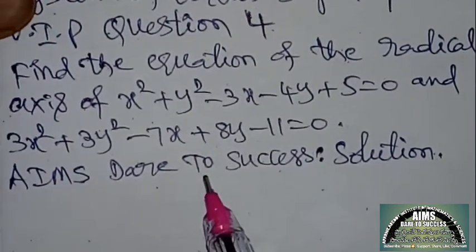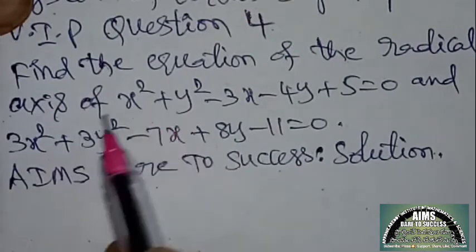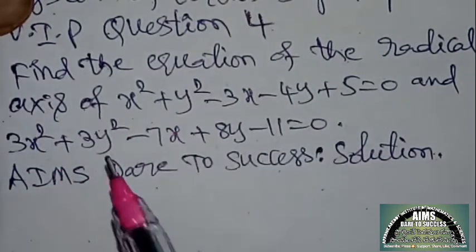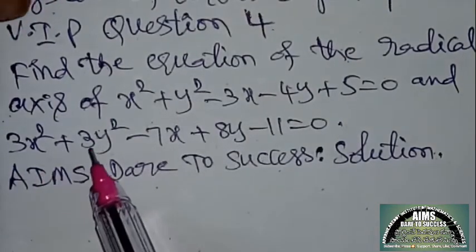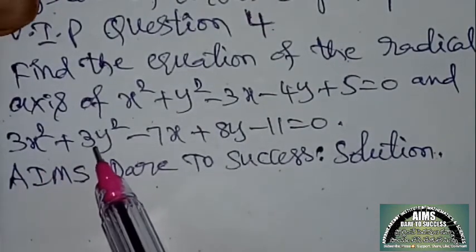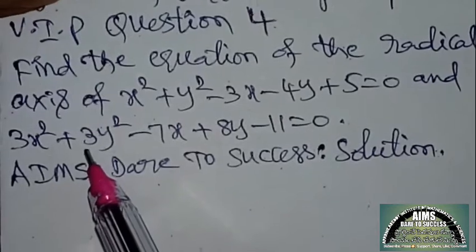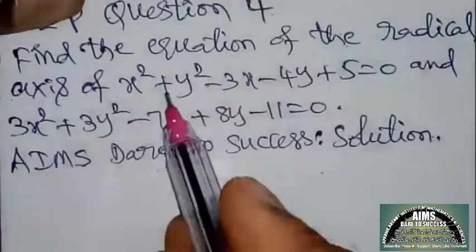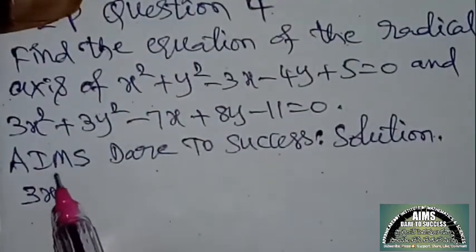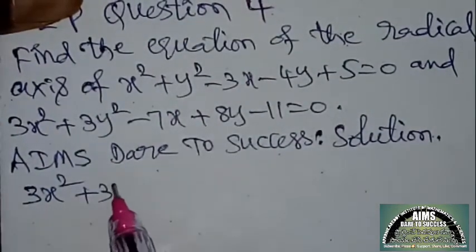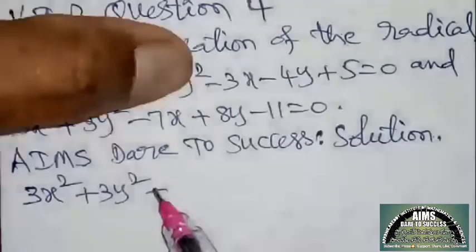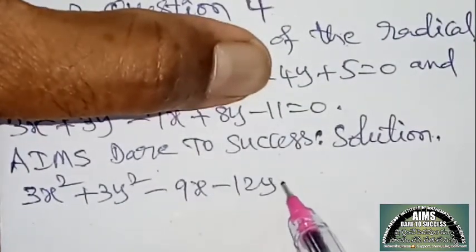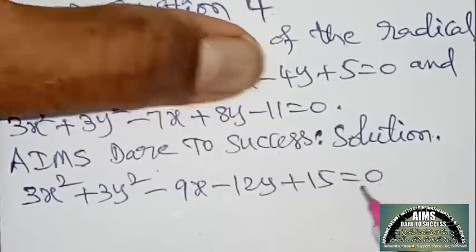Now verify: x² and y² coefficient from first circle is 1, from second circle is 3 — they are not equal. So multiply the first circle by 3. We get 3x² + 3y² − 9x − 12y + 15 = 0.